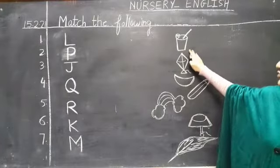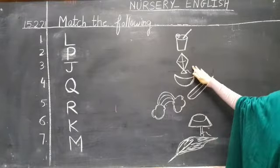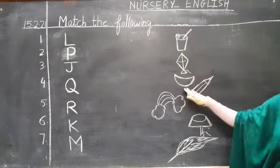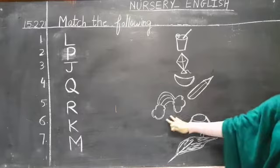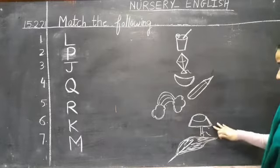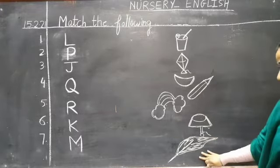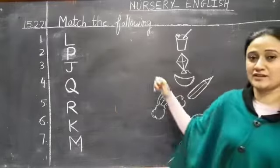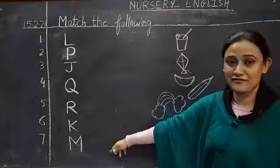Number one, this is juice, kite, moon, pencil, rainbow, lamp, and quill. Now we will match these with their respective letters.